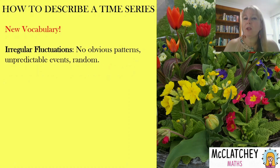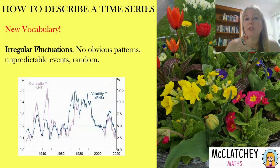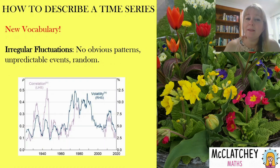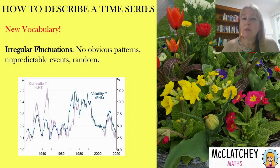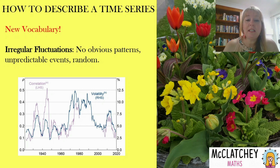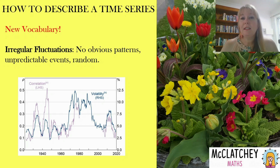Cycles are different from seasonal patterns because seasons repeat at the same time every year, every week, or even every day. We also have something called irregular fluctuations, which is where we experience no obvious patterns, unpredictable events, and things that are random. In this particular graph, it's not really growing in any particular direction — there just seems to be a lot of spikes all over the place.